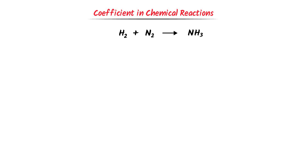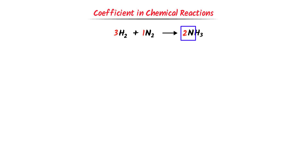There are two hydrogen atoms in the reactants and three hydrogen atoms in the products. I place 2 with products and 3 with the reactants. Now, 3 × 2 = 6 atoms and 2 × 3 = 6 atoms. There are two nitrogen atoms on each side. So this is a complete balanced chemical reaction.